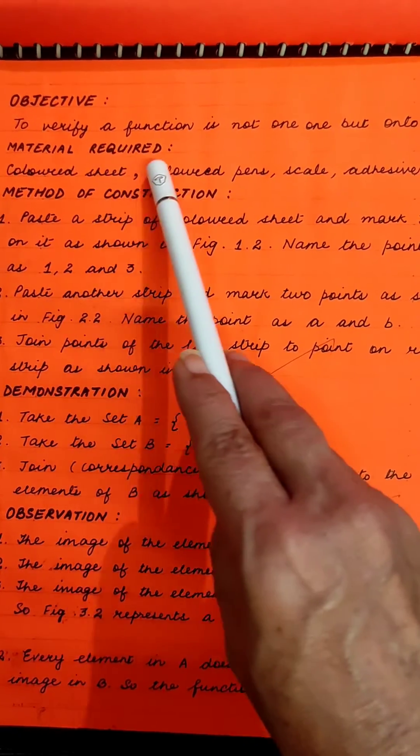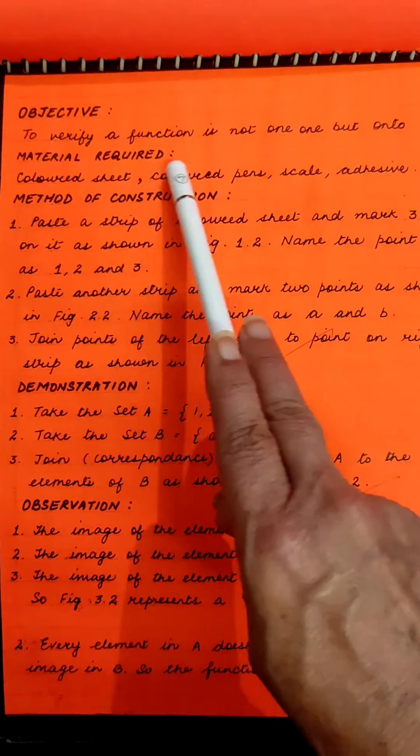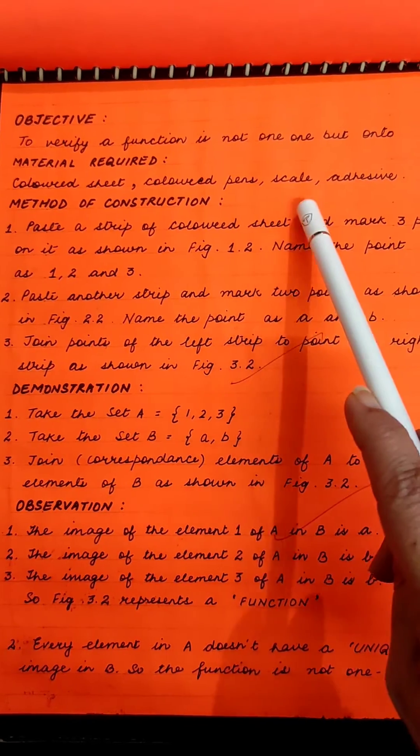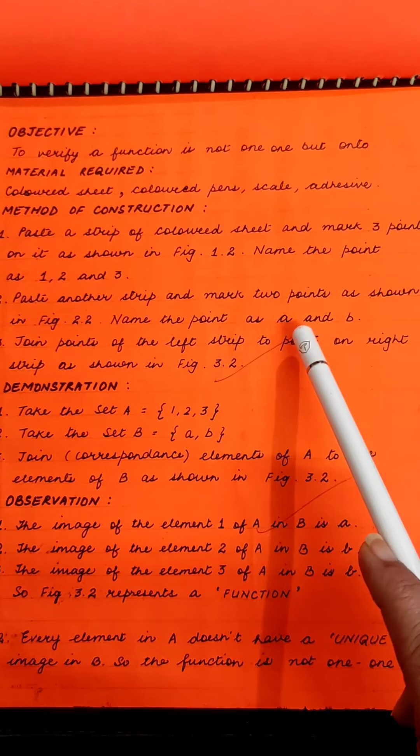The objective is to verify the function is not one-to-one but onto. Material required: colored sheets, colored pen, scale, adhesive. The method of construction: we have pasted two colored strips and joined them as shown in the figure. I had taken two different sets A and B, or X and Y.